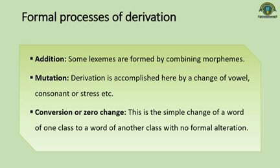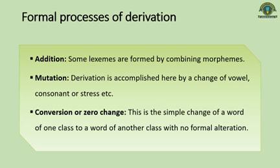The third formal process is conversion or zero change — a simple change of a word from one class to another with no formal alteration. For example, 'clean,' 'dry,' and 'equal' are adjectives but are also used as verbs. The relation of the adjective 'clean' to the verb 'clean' is similar to that of the adjective 'long' to the verb 'lengthen.' Words like 'fan' and 'hammer' are verbs also used as nouns, while 'capital,' 'initial,' and 'periodical' are both nouns and adjectives.